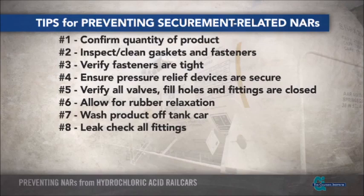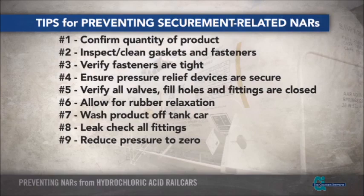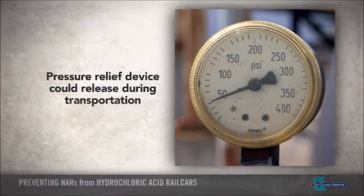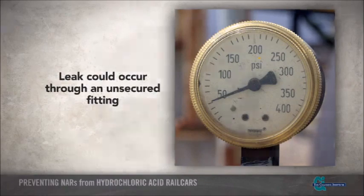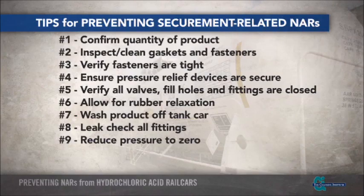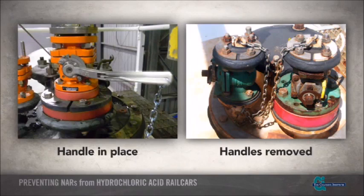After all fittings have been checked for leaks, one of the final steps to help reduce NARs is to reduce the pressure in the car as low as possible before shipping. For hydrochloric acid shipments, zero pressure in the car is recommended. Added pressure in the car increases the vapor pressure, and if too much pressure builds up, the safety relief device could potentially release during transport or a leak can occur through an unsecured fitting. It is less likely an NAR will occur if there is zero pressure in the car. If a protective housing is not in place to cover the fittings, the valve handles must be removed so the valves are not accidentally opened during transit. Handles are typically attached to the valve by a chain so they are not lost, and can also be removed even if a protective housing is in place.